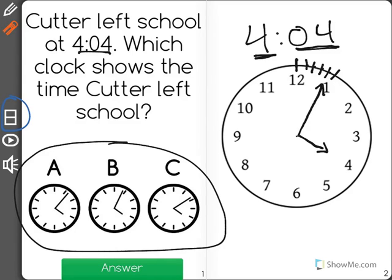You can see the minute hand is pointing before the one, and our hour hand is pointing at the four, just maybe a little past the four.